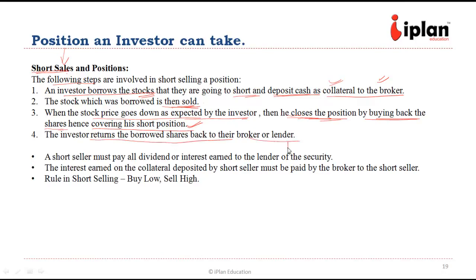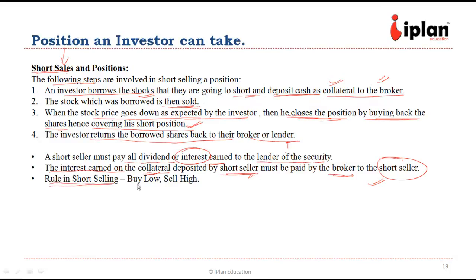The investor then returns the stock to the broker or lender. If there has been a dividend payment, that must be given to the lender of the security; if there has been an interest payment on the security, that also goes to the lender. The interest earned on the collateral deposited by the short seller will be given by the broker to the short seller. In simple terms: sell high first, then buy low to close the position and make profit.